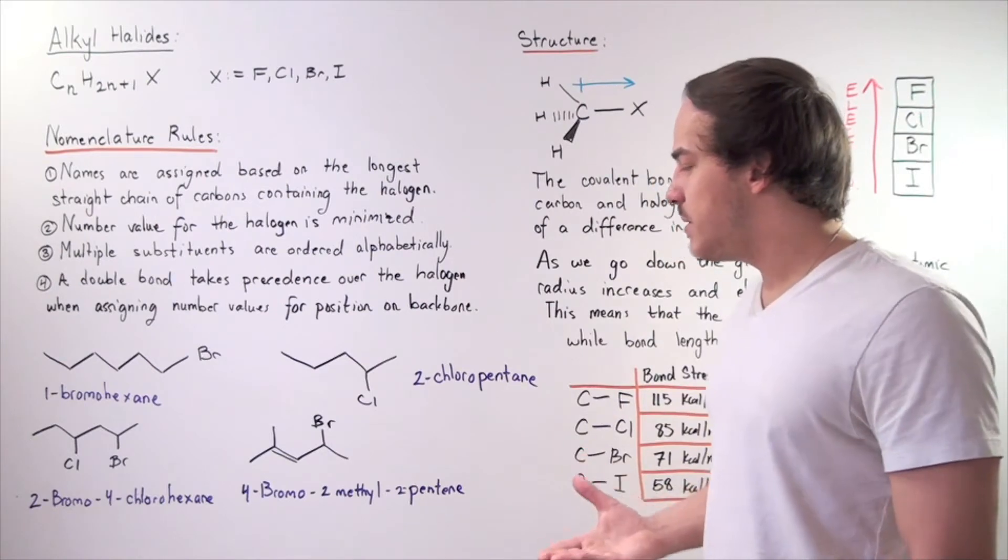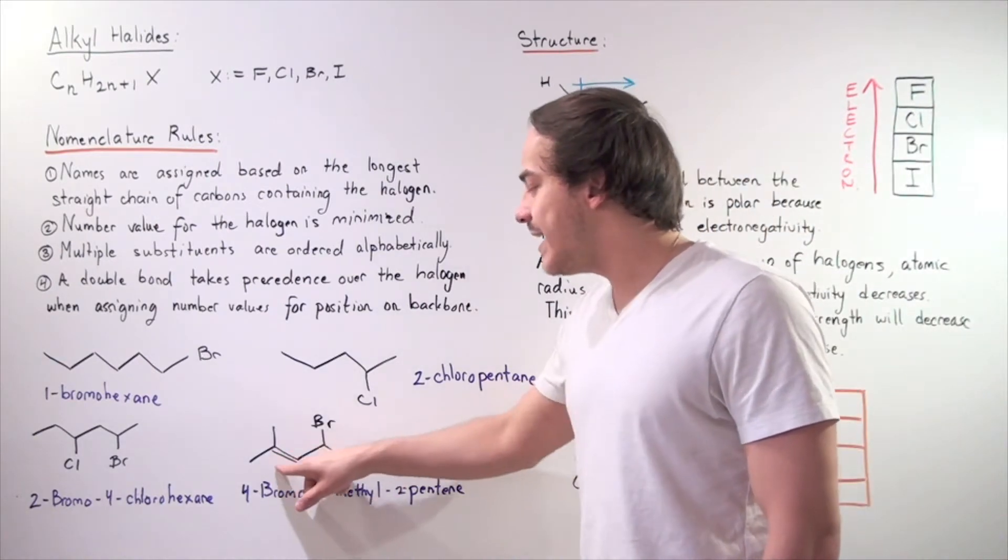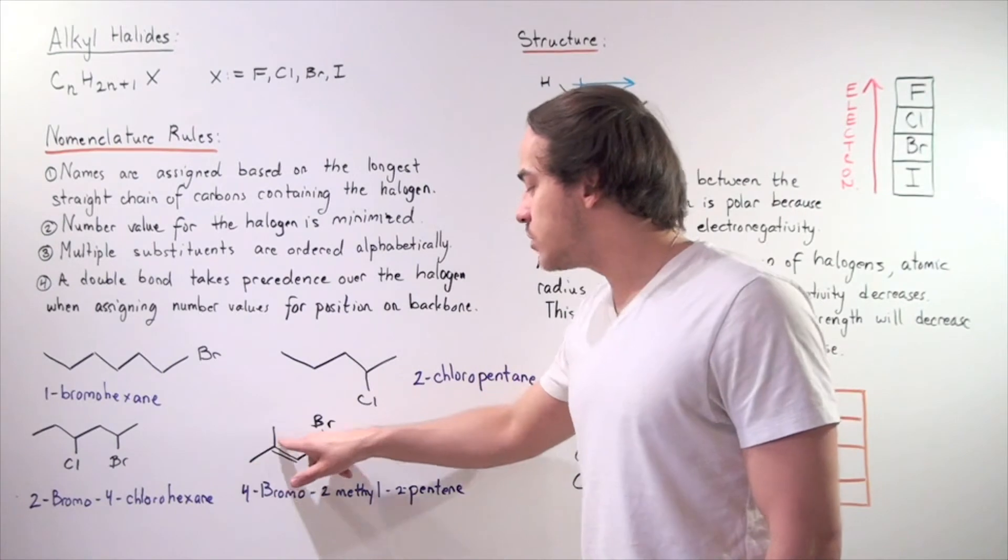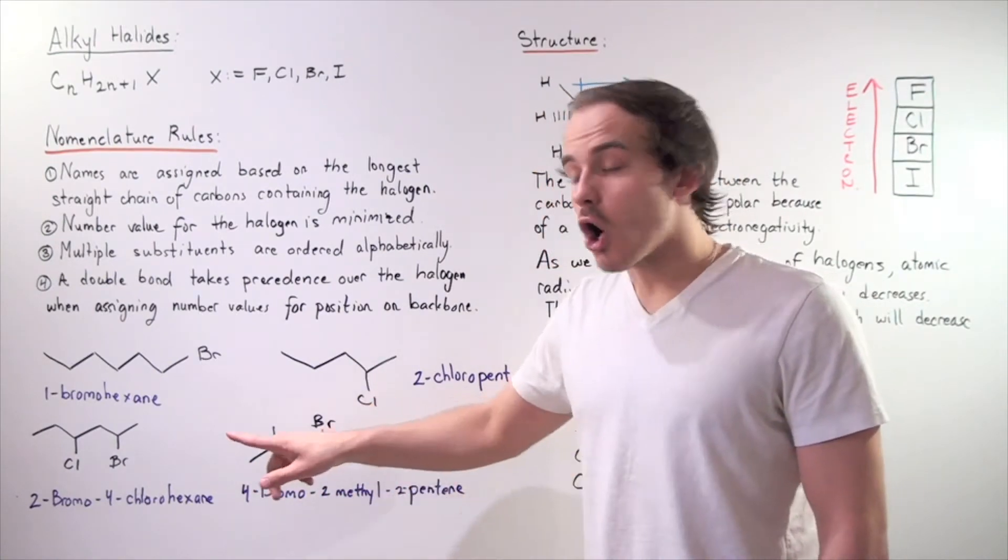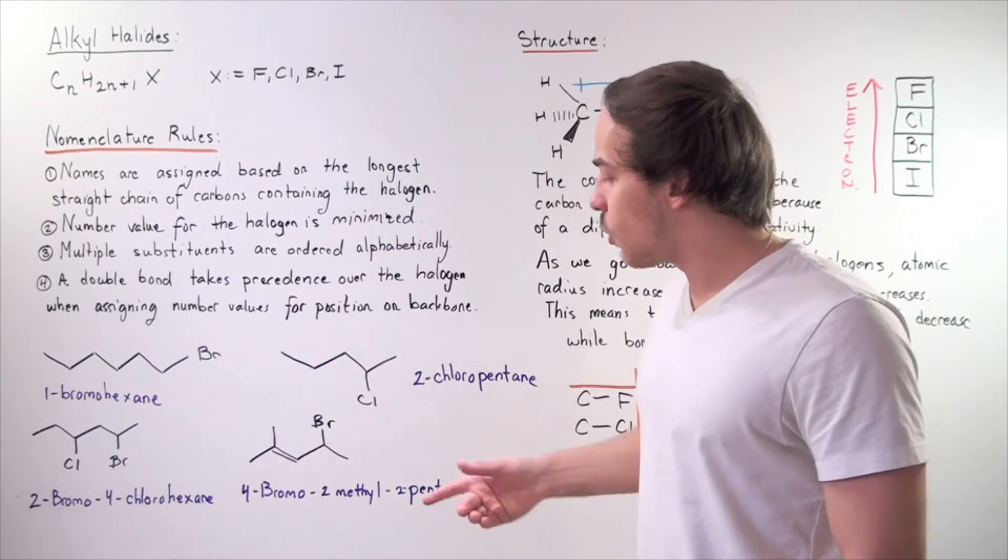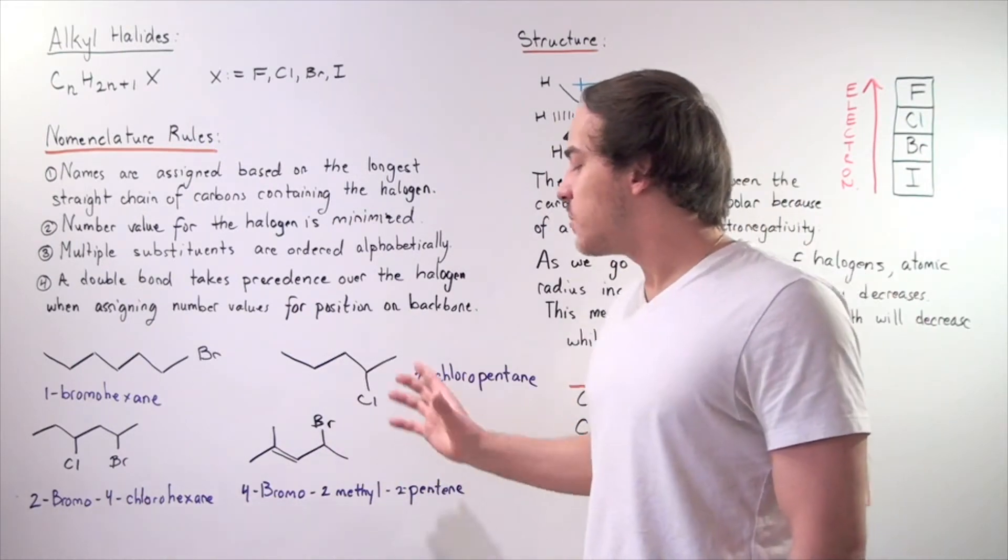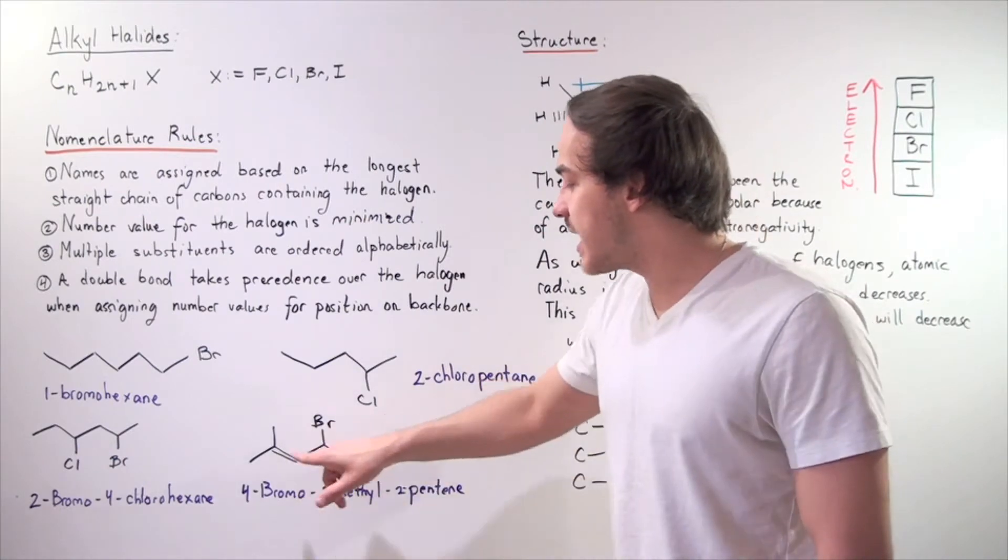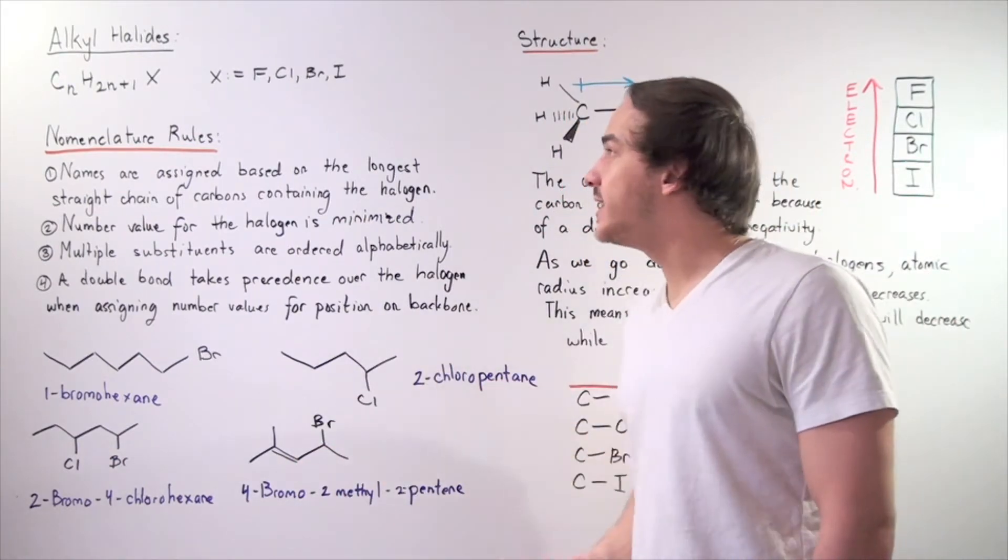Two pentene simply means our double bond is on the second carbon and we have one, two, three, four, five carbon alkene. Four bromine means we have our bromine in the fourth position and bromine comes before methyl. So two methyl is on the second position and we're done.